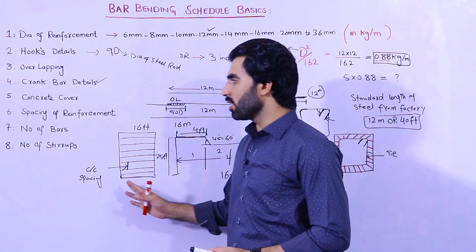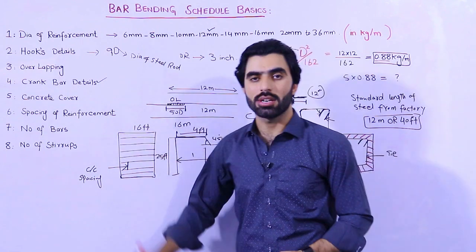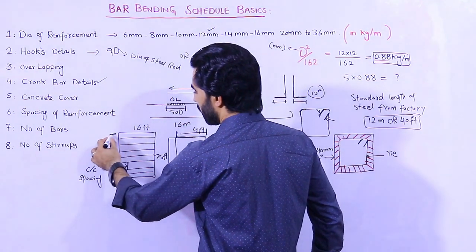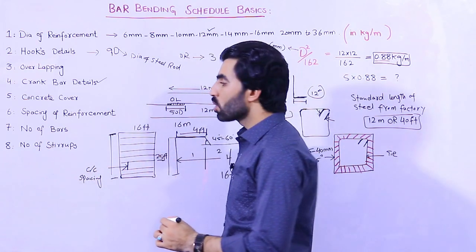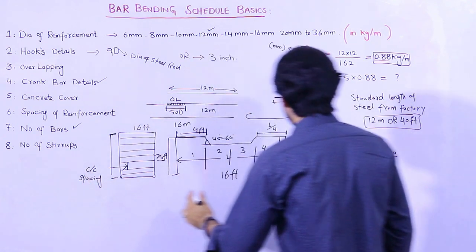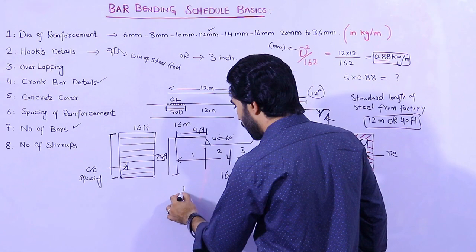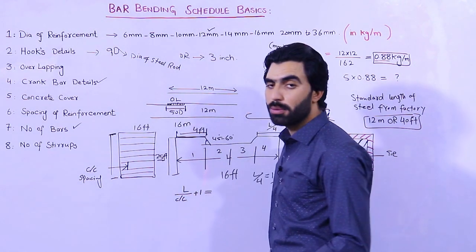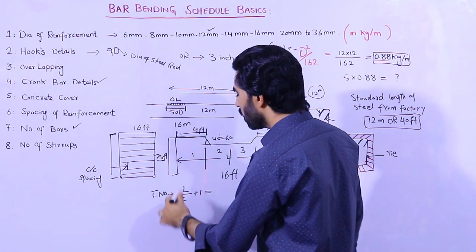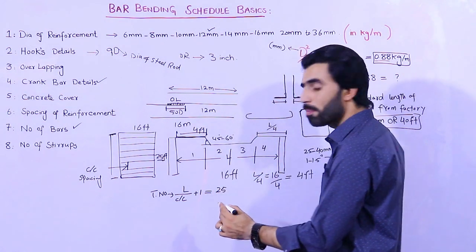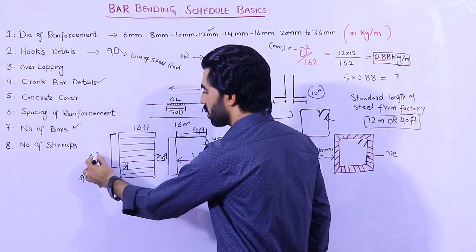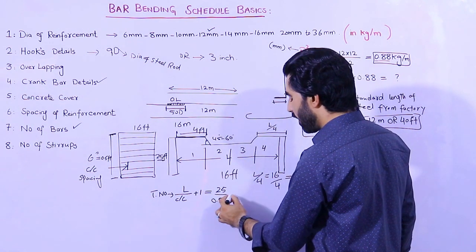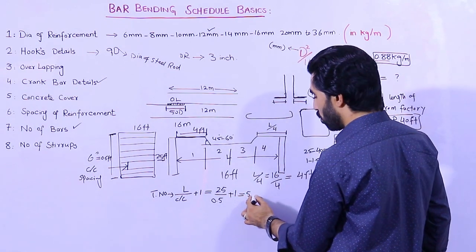With the help of center-to-center spacing we can find the numbers of steel rods — main bars or distribution bars in a slab. The formula to find the number of steel rods is: L divided by spacing (C/C), then plus 1. For example, if L is 25 feet and spacing is 6 inches (0.5 feet): 25 divided by 0.5, plus 1 equals 51 steel rods required on that side.